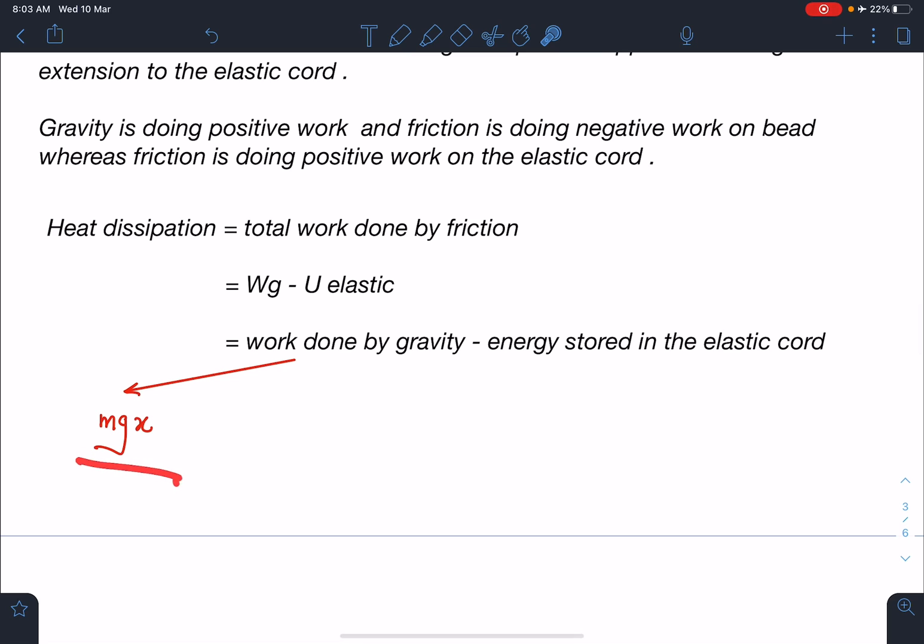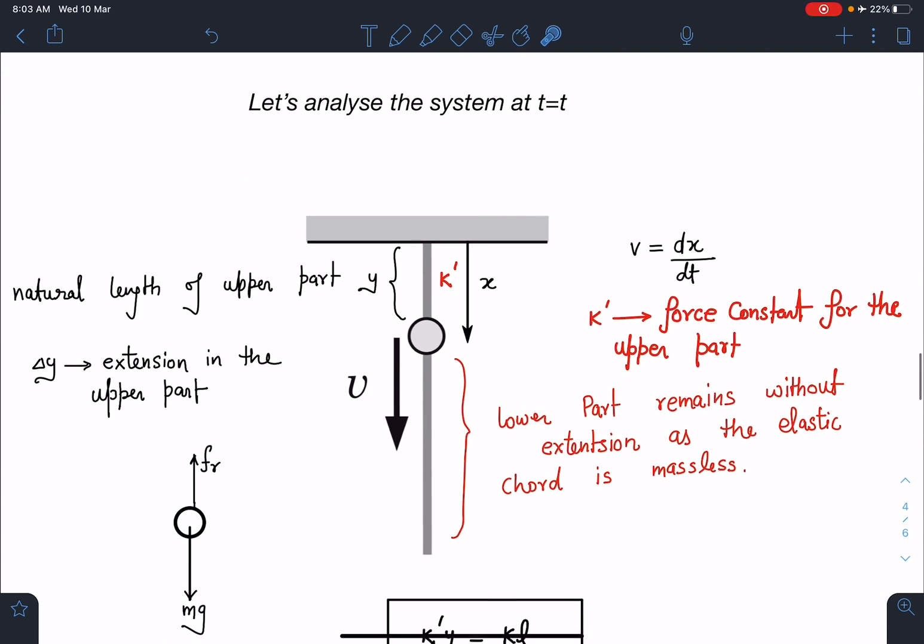Let's analyze the system at any general time t. From the ceiling at this instant, the bead is at a distance x. The bead speed is given as v, so I can write v equals dx/dt. Now, the natural length for this upper part, let's say that is y.